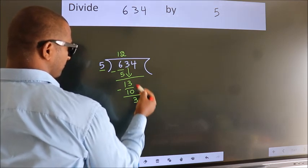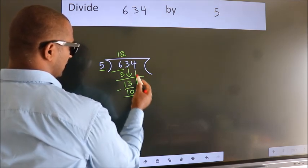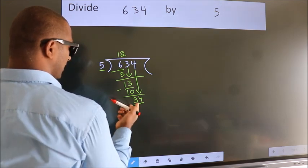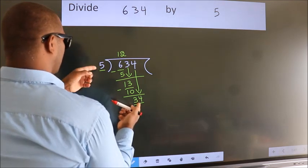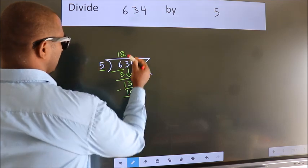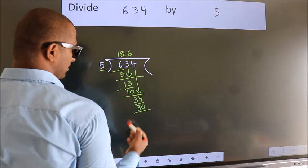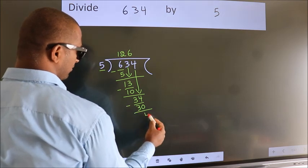After this, bring down the next number. So 4 down, so 34. A number close to 34 in the 5 table is 5 times 6, 30. Now we subtract. We get 4.